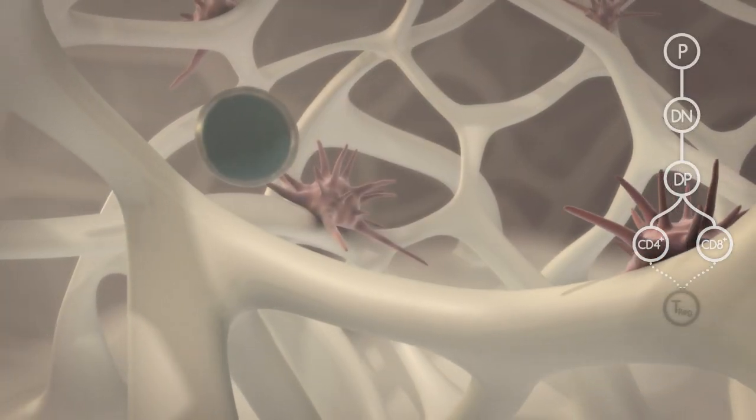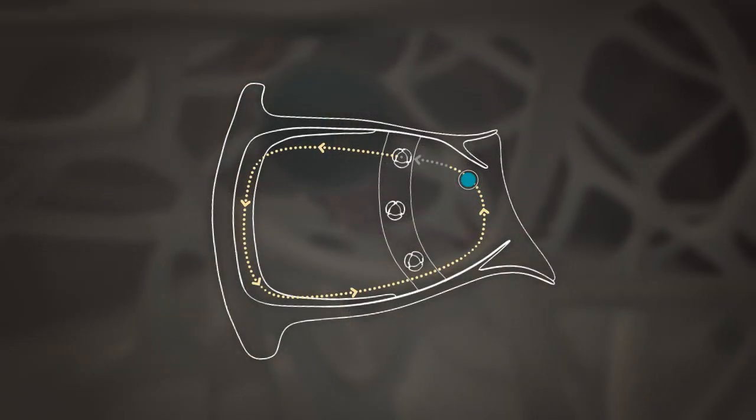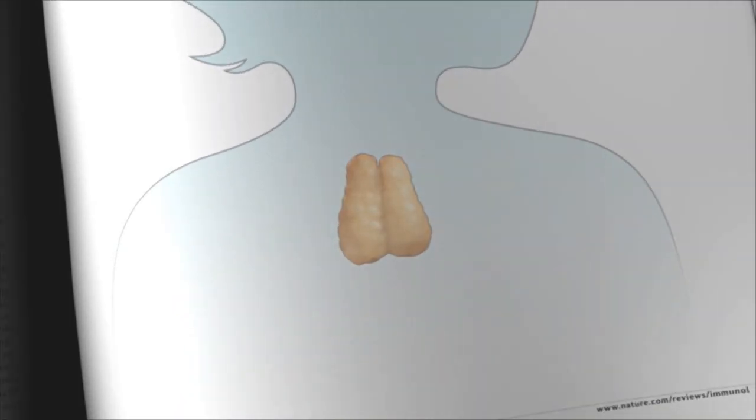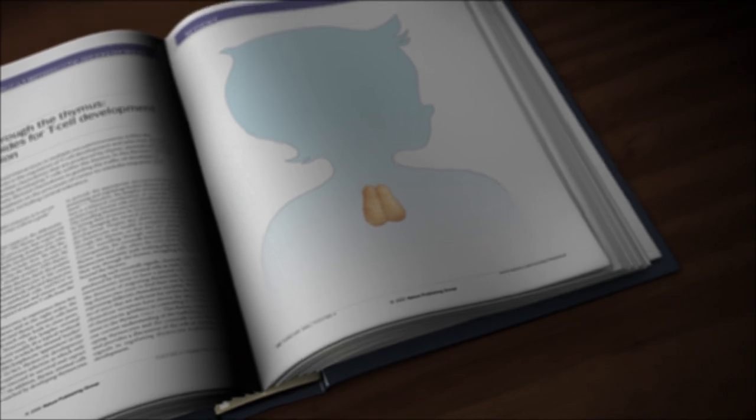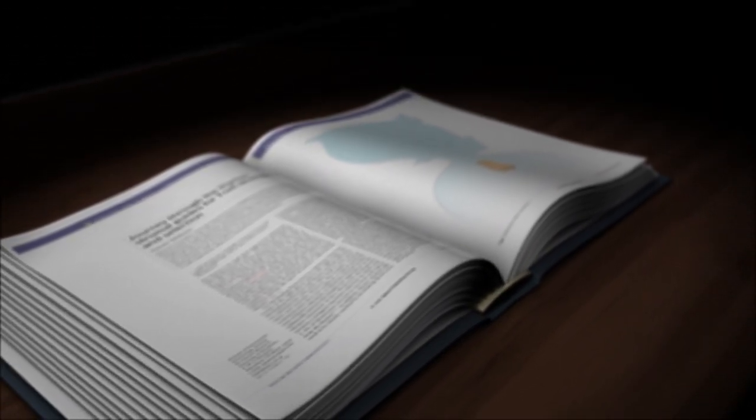Finally, at the end of this highly selective and arduous journey, mature thymocytes are attracted back to the corticomedullary junction, where they travel through the perivascular space and are channeled to postcapillary venules. These T-cells are then released into the periphery, equipped with the necessary knowledge and tools to mount an immune response.